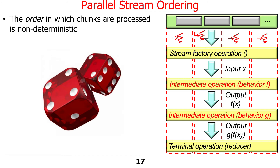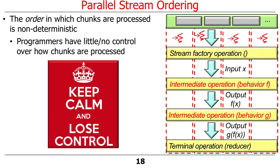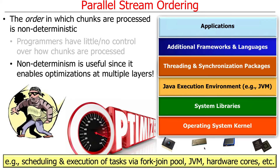The order in which chunks are processed is non-deterministic — that's by design. The idea is that you want the infrastructure to take care of this, and you have little or no control over how the chunks are processed or which way they run in parallel. This non-determinism is intentional because it allows optimizations to take place at various layers. The best example is the way the fork-join pool behaves: it takes the chunks you're processing and sticks them on a deque — a double-ended queue — with each thread in the thread pool.